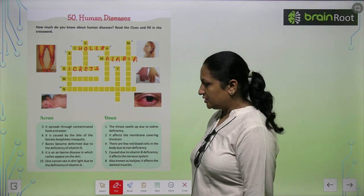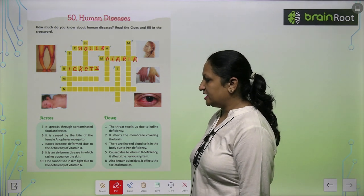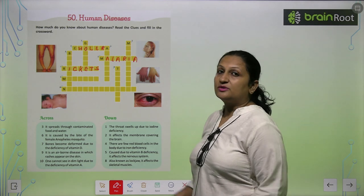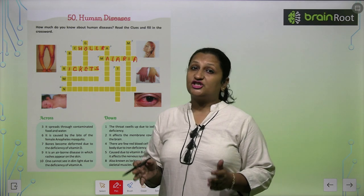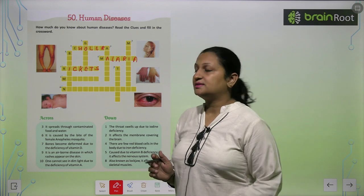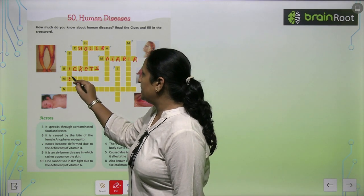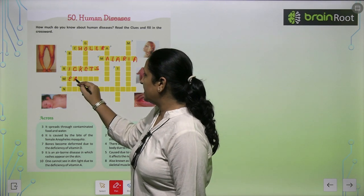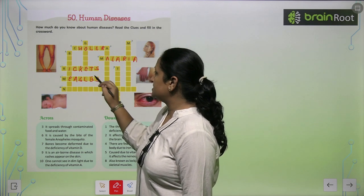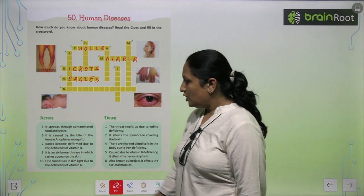See the ninth one, children. It is an airborne disease in which rashes appear on the skin. When rashes appear on the skin, that disease is called Measles — M-E-A-S-L-E-S, Measles.